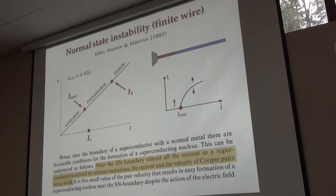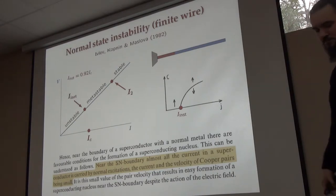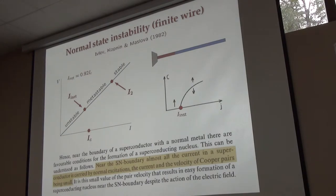The nucleation happens near the superconducting-normal boundary because the current is carried by normal excitations, the current velocity of Cooper pairs here is small, and that's why it's a region where it's better to have some superconductivity. This was about the behavior of the instability line, and generally this instability current is of the order of the critical current.